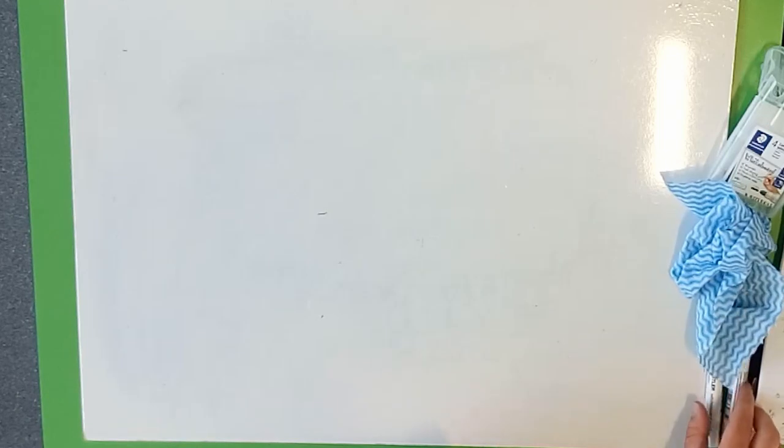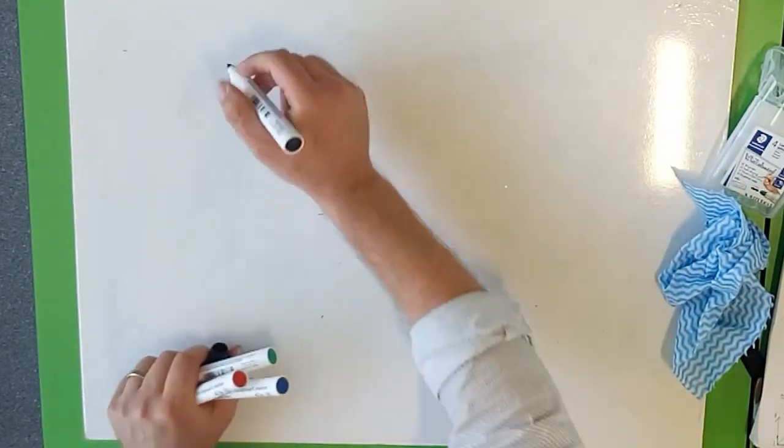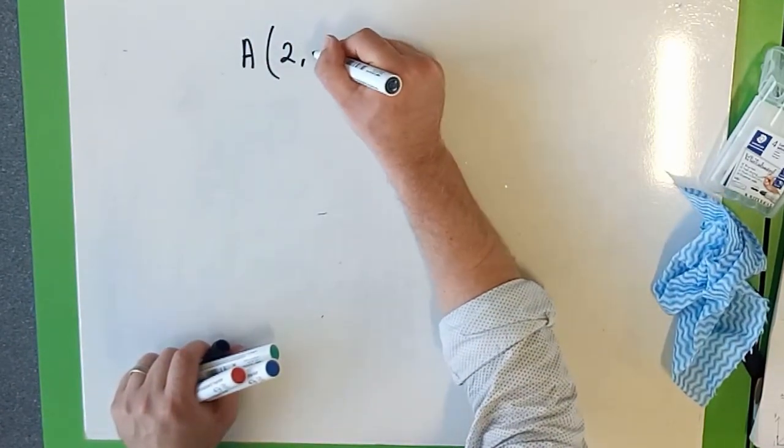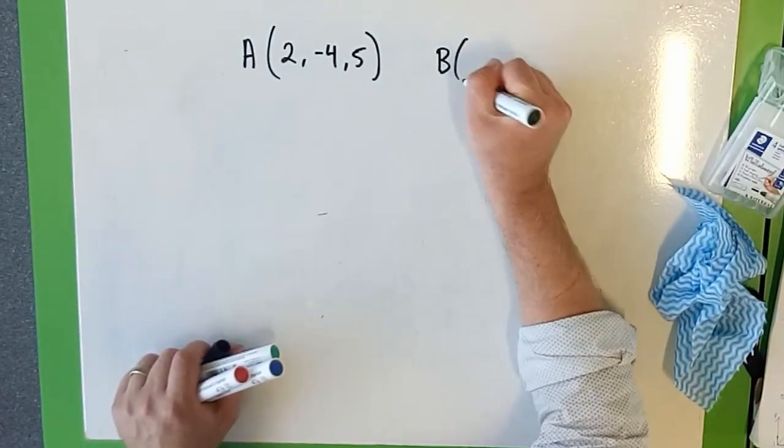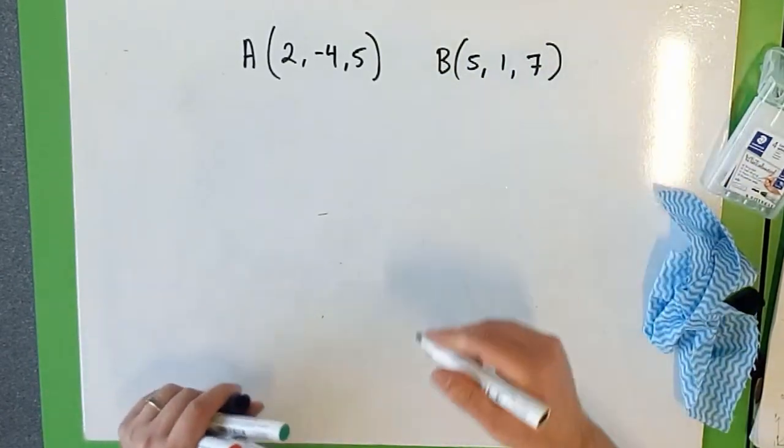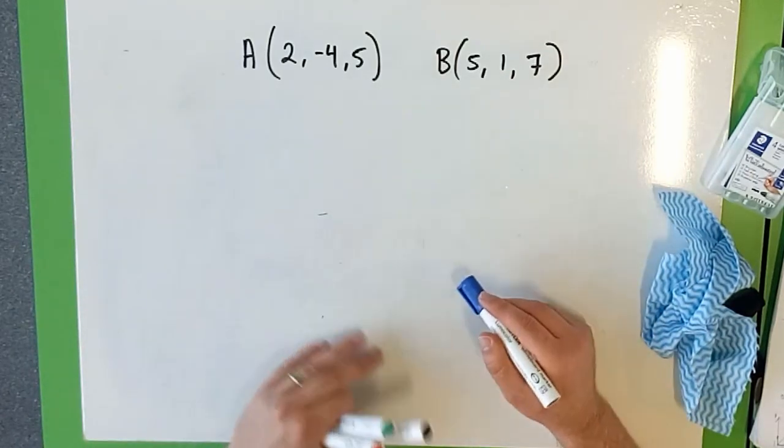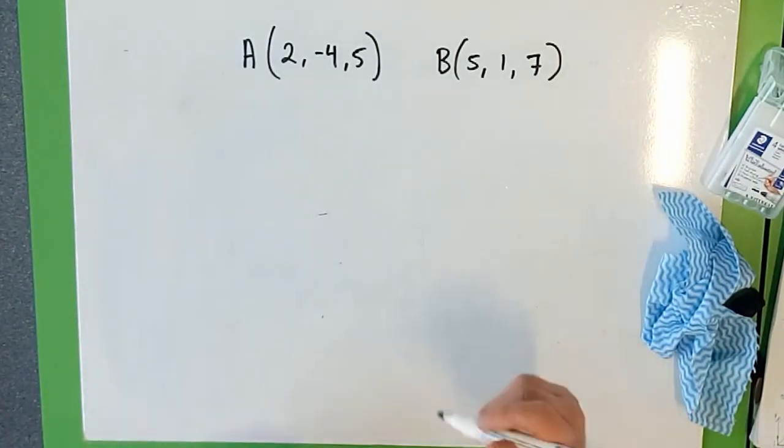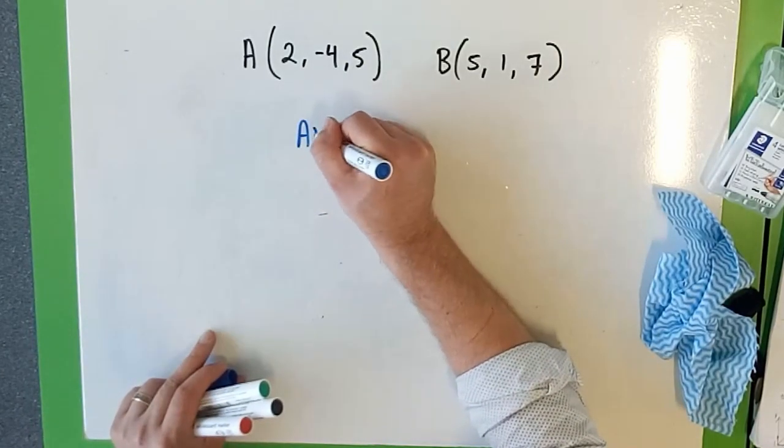Alright, let's have a look at an example to help, about why this might be a useful thing to do. Just say you've got the point A(2, -4, 5) and B is another point of (5, 1, 7). So this is in three dimensions, so it's a little bit harder for me to draw these points. What if we want to find the midpoint of the line AB? So let's find the line AB to start with.